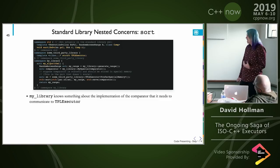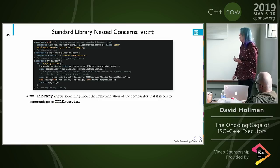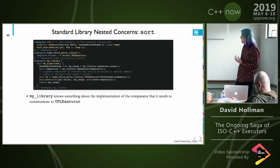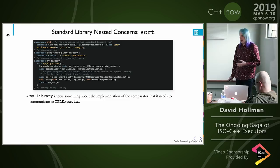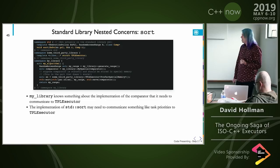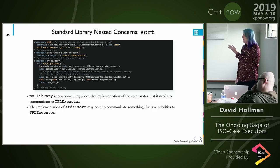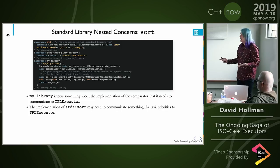My library knows something about the implementation of the comparator that needs to communicate to the executor. Maybe it wants the executor to store the comparator in some sort of special memory — a scratch pad or manually managed cache — that is faster. The implementation of std::sort may need to communicate task priorities to the executor, but if we put those task priorities into the interface given to my algorithm, we would be leaking an implementation detail of std::sort.